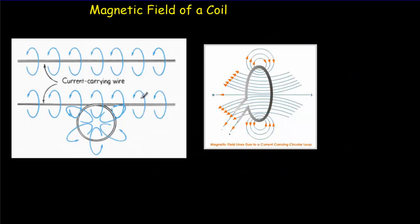If we take our current-carrying wire and wrap it to make a loop, we get lots of field lines enclosed in a small area, producing a fairly strong field inside the loop itself. The field passes through the plane of the loop horizontally, then bends outward as you get farther away from the loop.